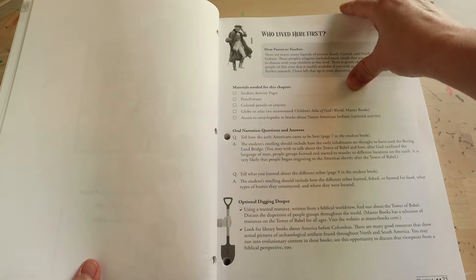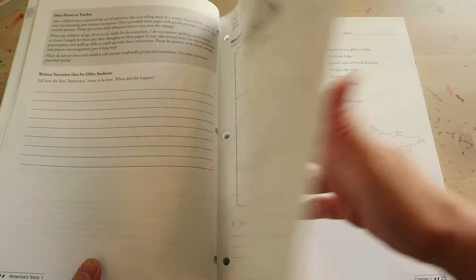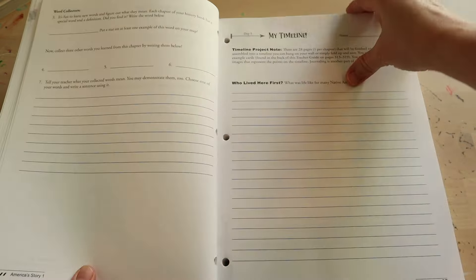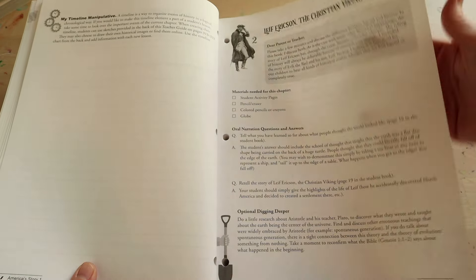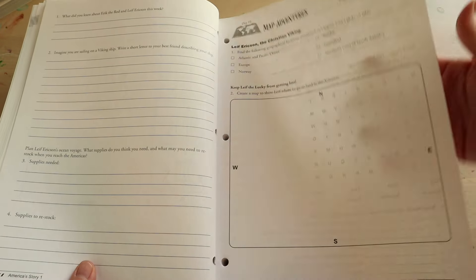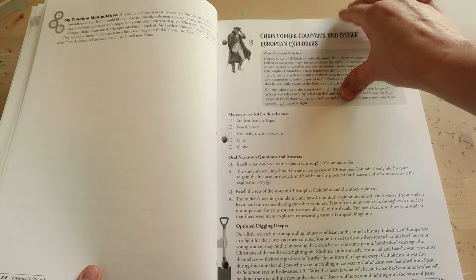At the time of filming, they have two different options: an e-book and a physical book. For the student book, it is $34.39 for the physical copy and for the e-book it is $30.09. For the physical teacher guide, it is $26.39 and the e-book is $23.09.